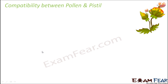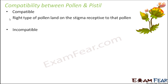Who does that compatibility check? Compatible and incompatible are the two terms. Compatible means the right type of pollen has landed on the stigma, and the stigma is receptive to that pollen — it is there to receive that type of pollen only. So the pollen-pistil interaction is compatible.